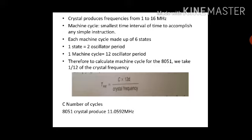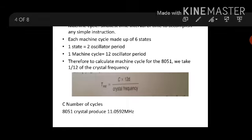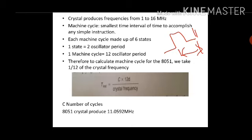These clock frequencies are produced by 8051 with a frequency range from 1 to 16 megahertz. If I say this is one clock frequency, it can have a frequency between 1 to 16 megahertz. Machine cycle is nothing but the smallest time interval to accomplish any simple instruction — the time interval to execute an instruction.